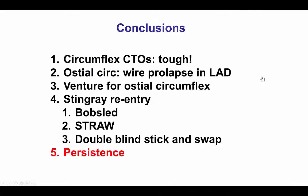This case has several lessons. First, circumflex CTOs can be tough due to tortuosity and calcification. What is also common for circumflex CTOs is that they don't have good collaterals. In this case, there was an ipsilateral epicardial collateral that was fairly difficult to use.